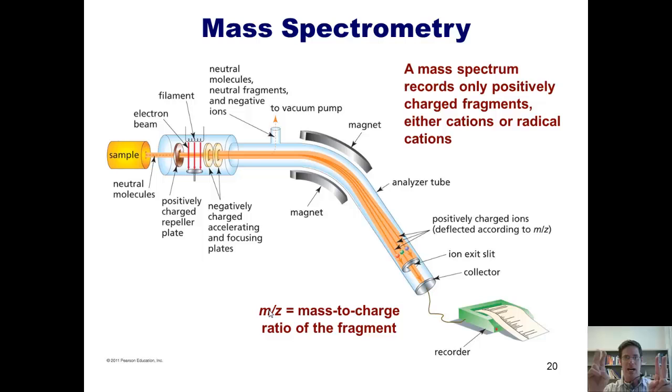This time is called their time of flight. Now you'll notice in this figure there's lots of components that just kind of shows you the different components in a mass spectral column.